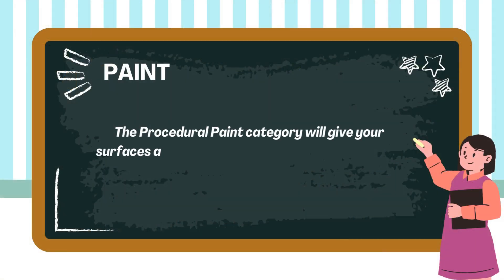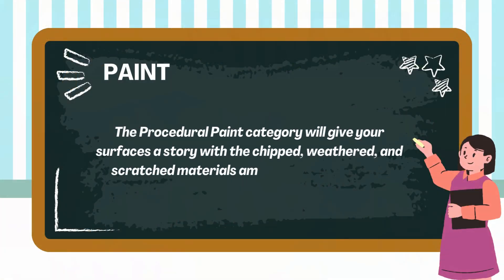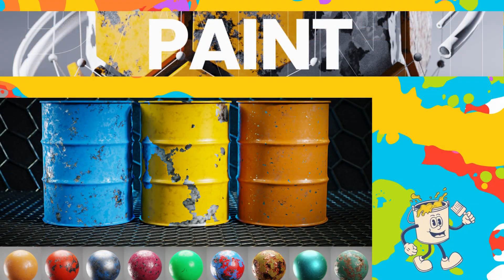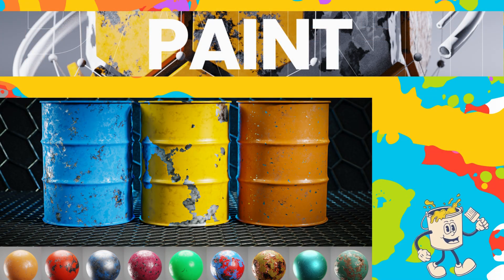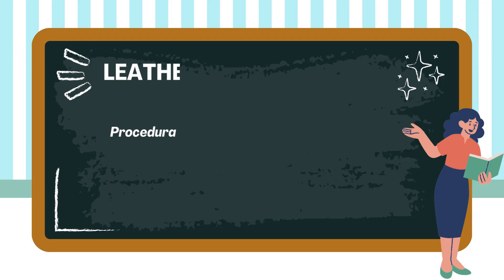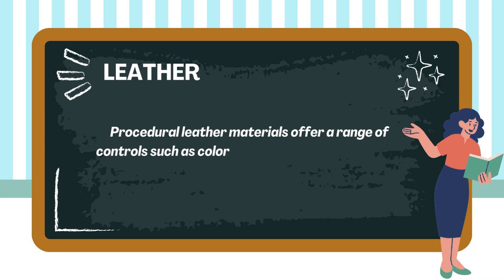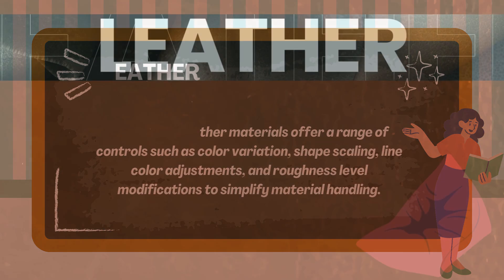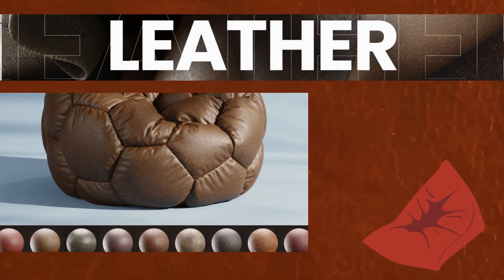The procedural paint category will give your surfaces a story with chipped, weathered, and scratched materials among many other paint styles. Procedural leather materials offer a range of controls such as color variation, shape scaling, line color adjustments, and roughness level modifications to simplify material handling.